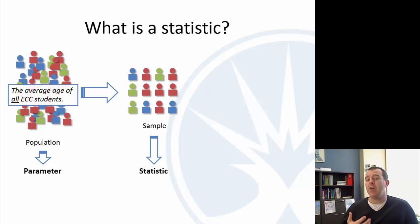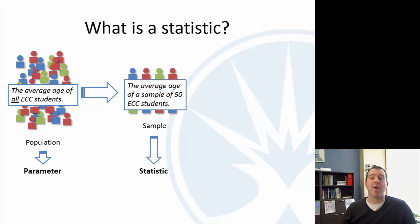So again, our parameter could be the average age of all students. The statistic might be the average age of a sample of 50 students. When we look at a statistic, we're just describing the average that we calculated from our sample. That's called descriptive statistics. That's just factual. What was the average of our sample? Inferential is when we're drawing some conclusions based on that.